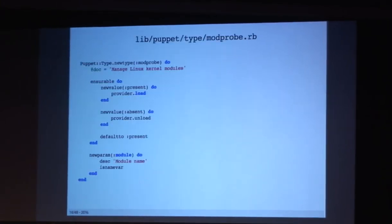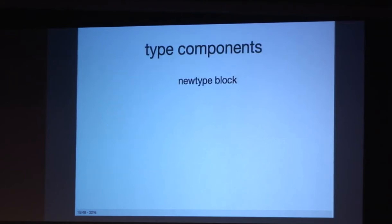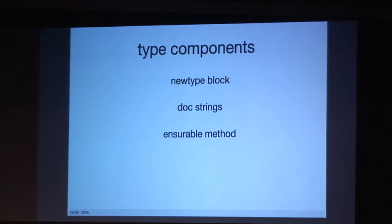So the type. So the modprobe type and the Puppet type modprobe, it's very simple. It's very easy. Nothing too crazy. There's a single parameter, a couple insurable values, and a doc string. So let's actually go through the individual components. We're going to talk about the new type block, the doc strings, the insurable method, and params and properties.